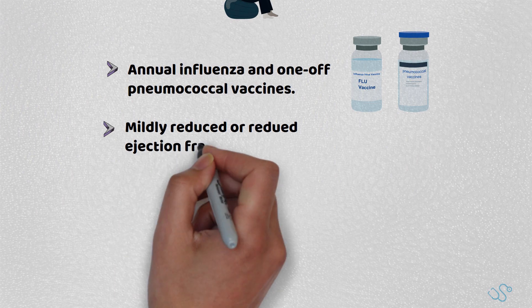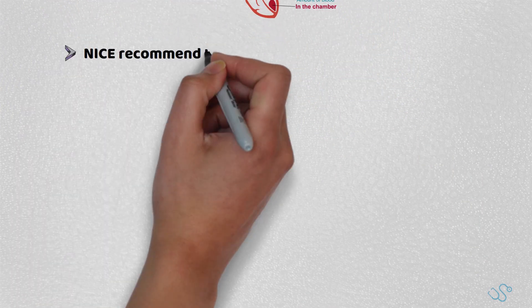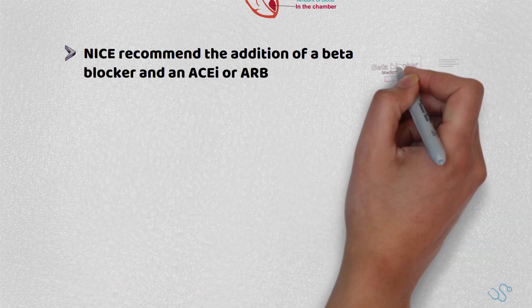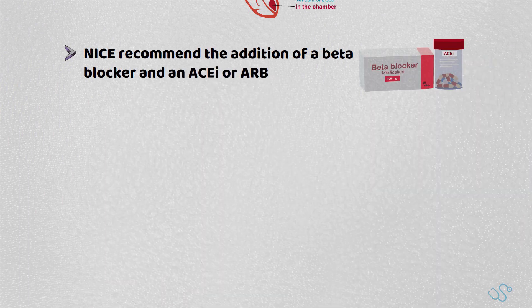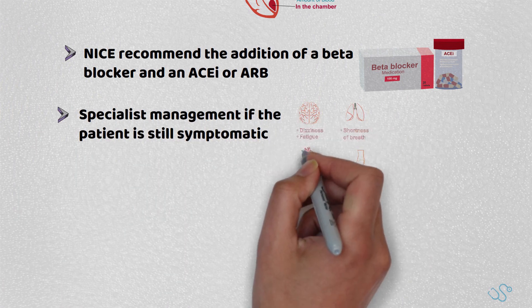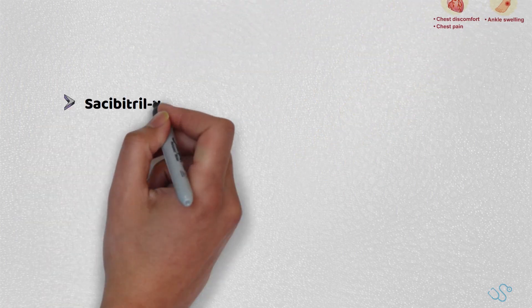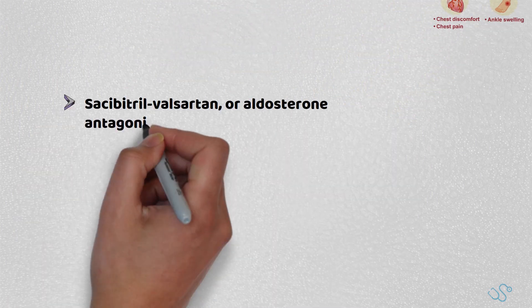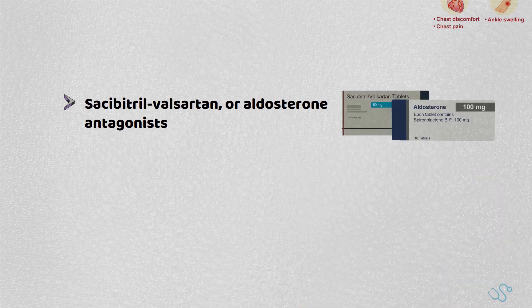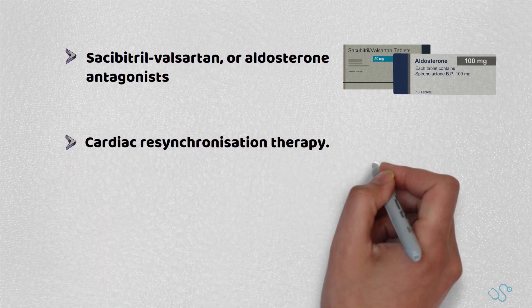For patients with either mildly reduced or reduced ejection fraction, NICE recommend the addition of a beta blocker and an ACE inhibitor or an angiotensin receptor blocker. If despite optimising doses the patient is still symptomatic, NICE recommends considering a referral to specialist management, where newly licensed medications such as sacubitril-valsartan or aldosterone antagonists are often used, with some of these medications sometimes used in primary care. Failing that, patients may be indicated for cardiac resynchronisation therapy.